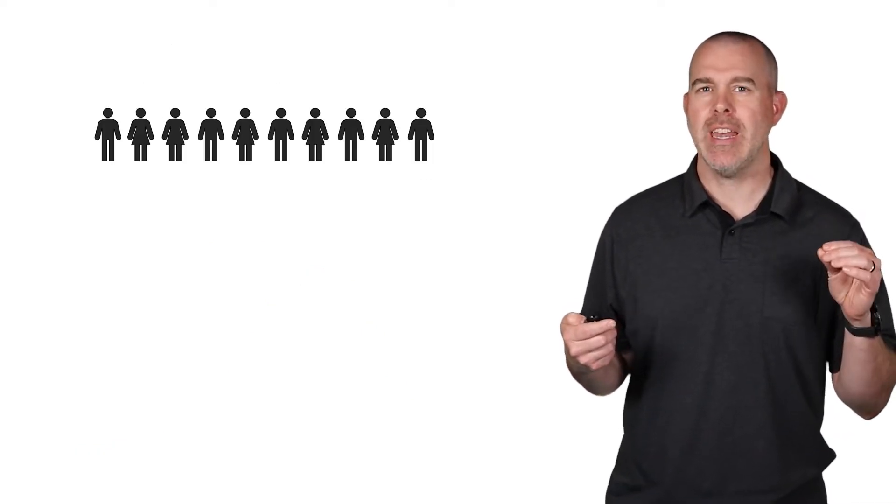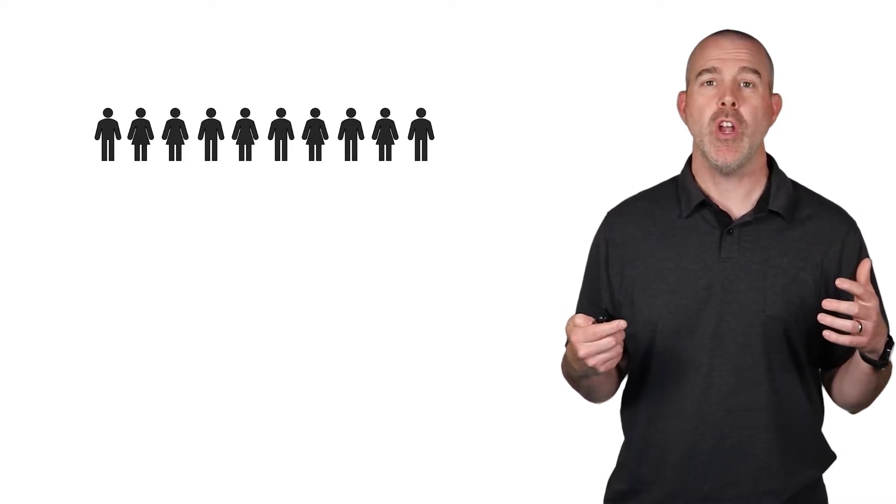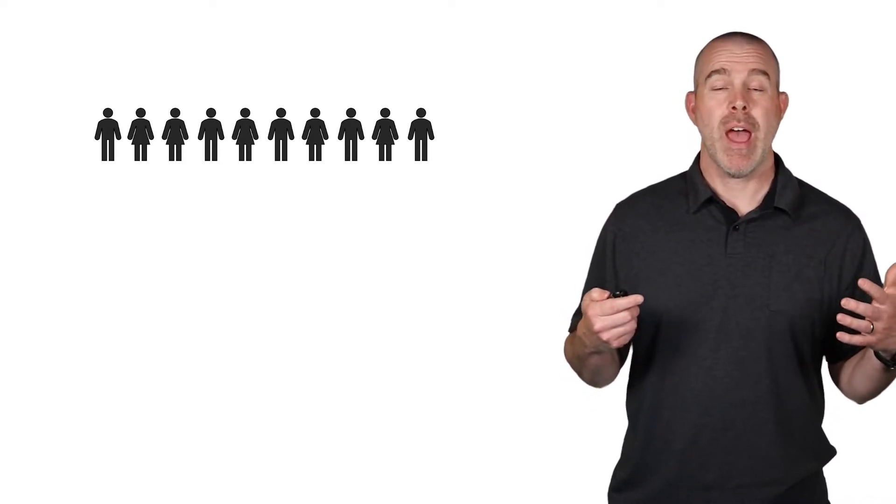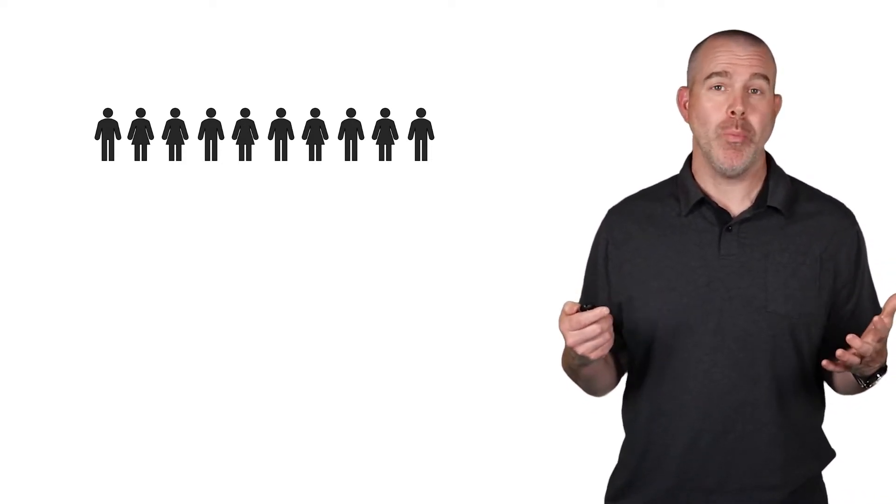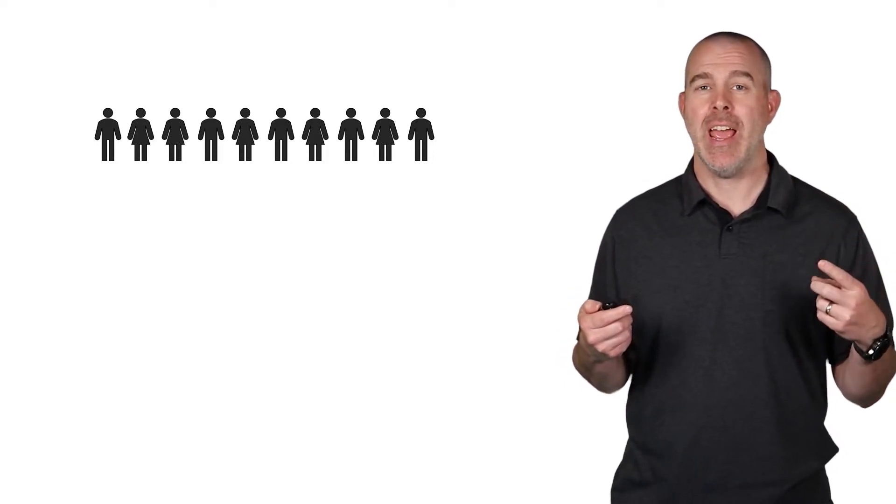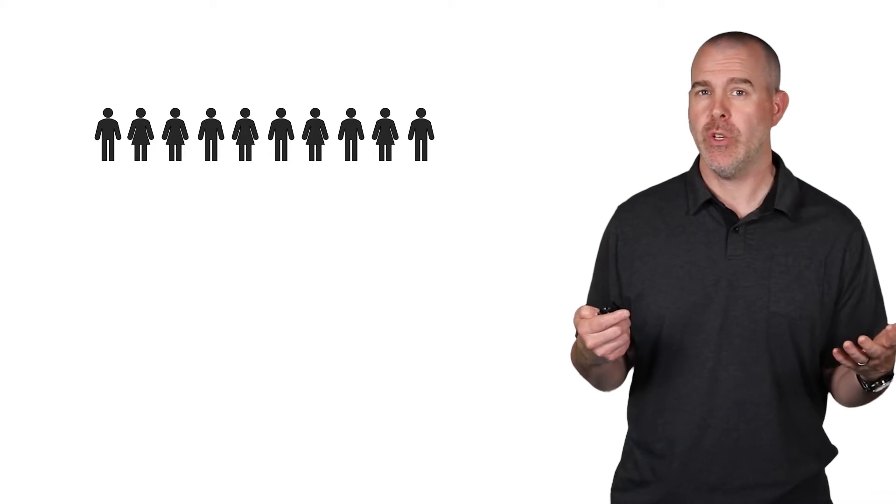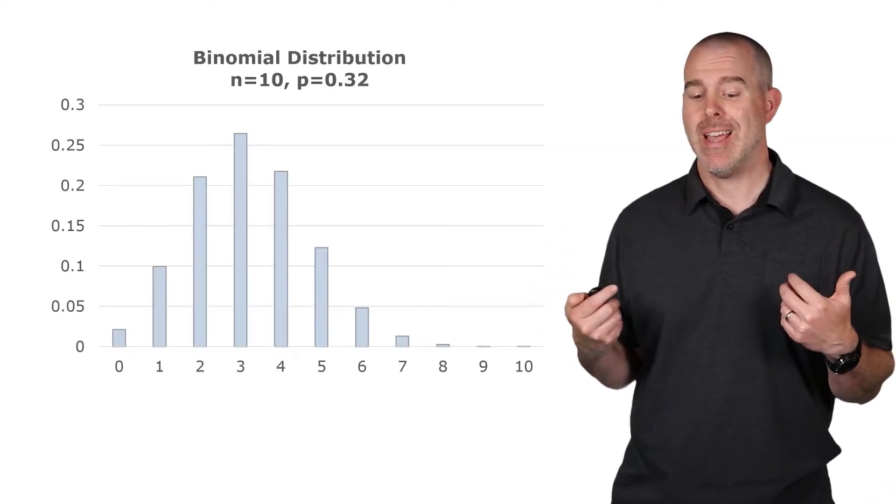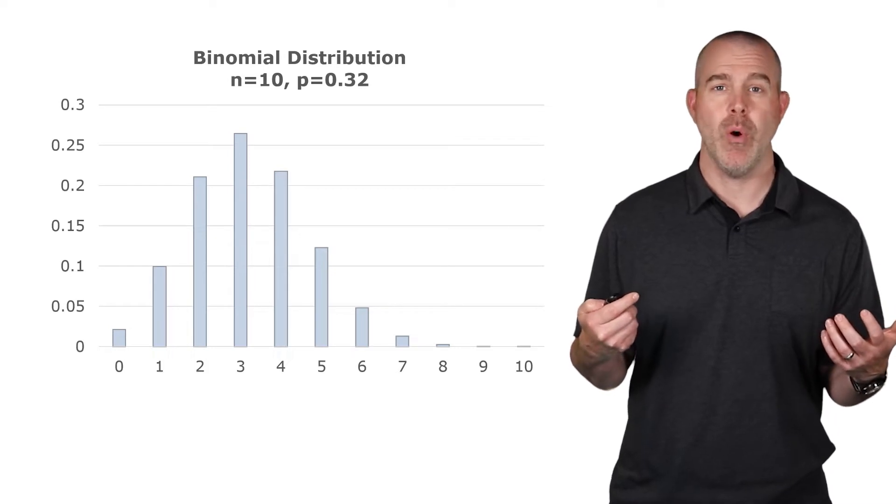Let's say we had 10 individuals and we want to know, are they a Democrat or not? Well, that's a binomial distribution. N is 10, and then p would be 0.32. The probability distribution ends up looking something like this. That's for n equal 10, p equal 0.32.